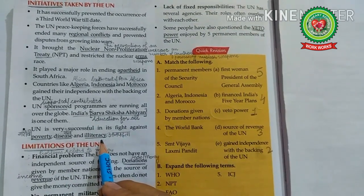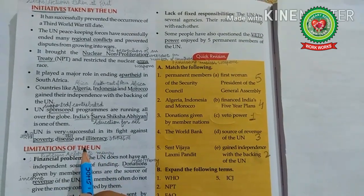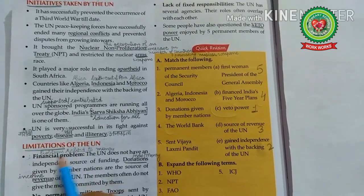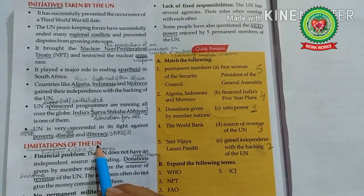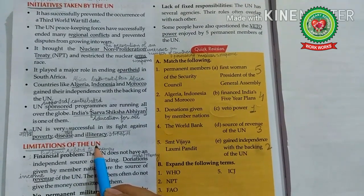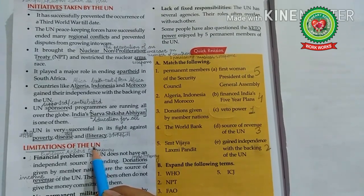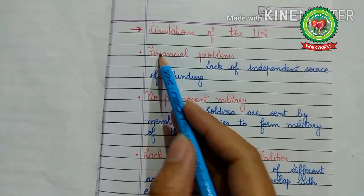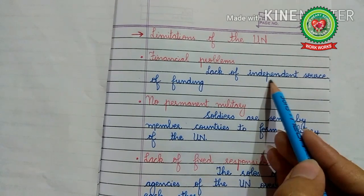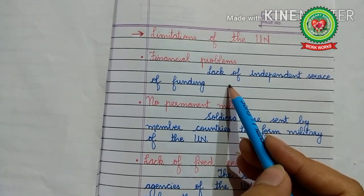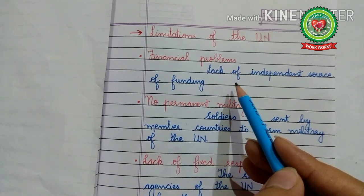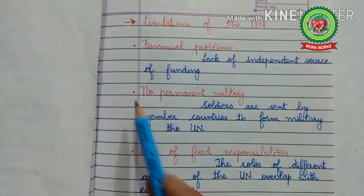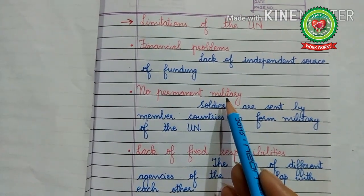To sum up, the United Nations has many achievements to its credit. Now the next topic is the limitations of the UN. First limitation: financial problems — that means lack of an independent source of funding. The United Nations does not have a stable source of budget and relies on member states to provide funds to operate.